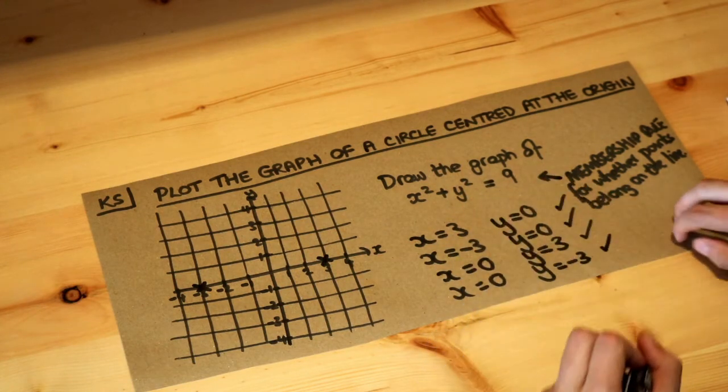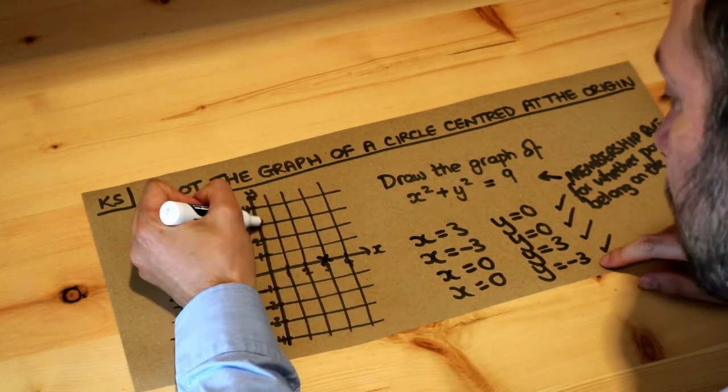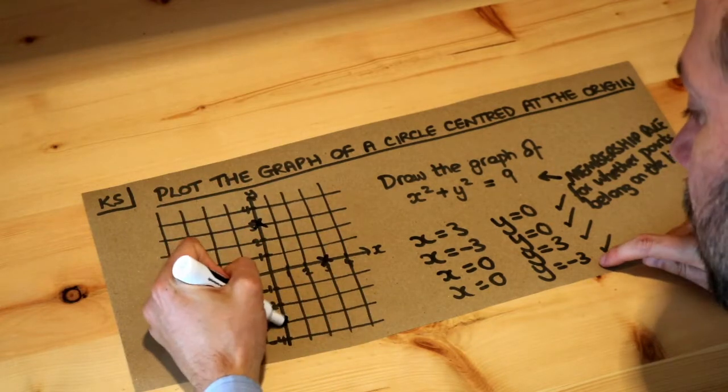So we've got a bunch of points, four points that we know are on the line. So 0, 3 is here, and 0, minus 3 is here.